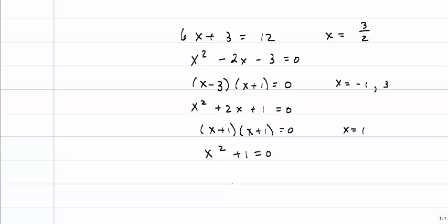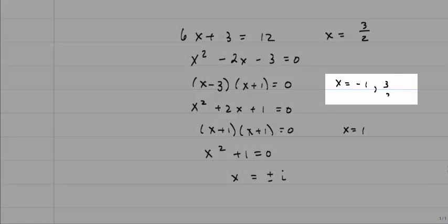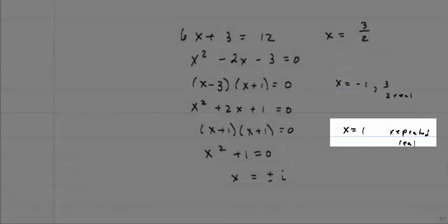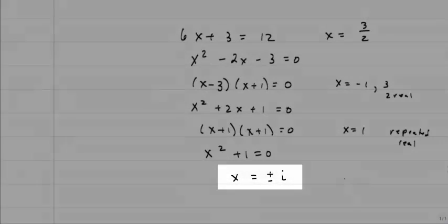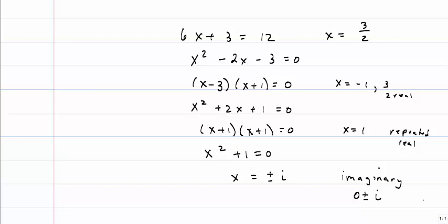And then I could have something like this, where I'd end up with complex solutions. So I have two real, I have a repeated real, and then I have imaginary. When we're solving differential equations that are second-order, just like we did with quadratics, we're going to have three different types of solutions.